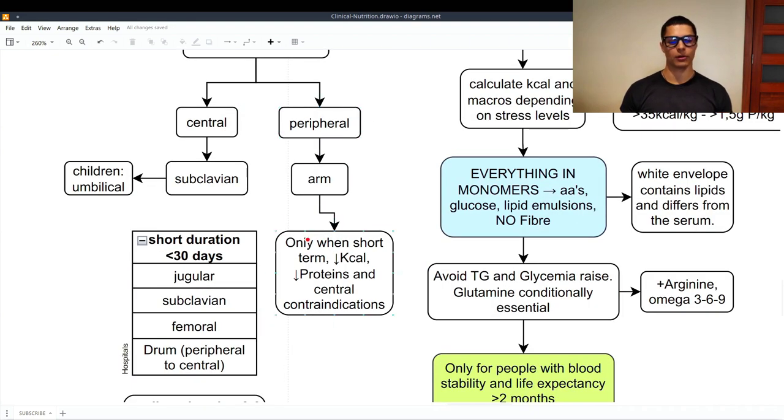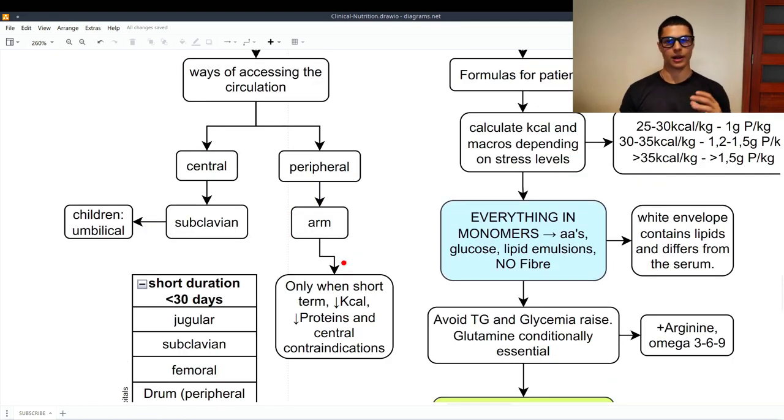We use the peripheral only when we are giving parenteral nutrition for short term, when the caloric needs are low, and also the protein needs are low. Because this type of parenteral nutrition cannot really fulfill the whole needs of the individual. Because you cannot deliver a high osmolarity formula using a peripheral way. And also, we use peripheral ways when there are contraindications for the central one.